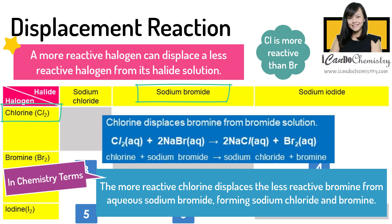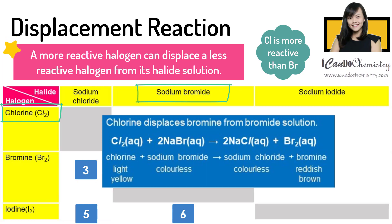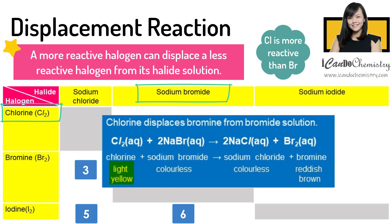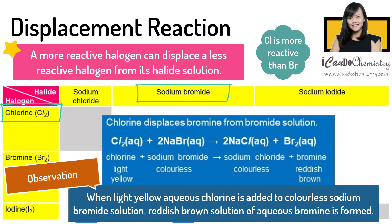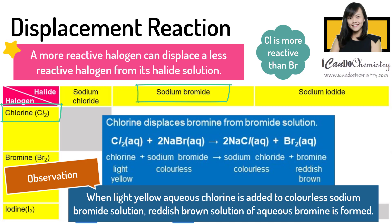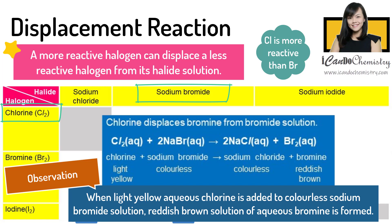Now what would the observation be? Aqueous chlorine is light yellow, both halide solutions are colourless, and aqueous bromine is reddish brown. Hence in this reaction, when light yellow aqueous chlorine is added to colourless sodium bromide solution, a reddish brown solution of aqueous bromine is formed.